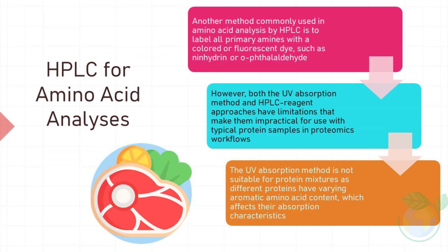HPLC for Amino Acid Analysis. Another method commonly used in amino acid analysis by HPLC is to label all primary amines, such as the N-terminus and side chain of lysine residues, with a colored or fluorescent dye, such as ninhydrin or ortho-phthalaldehyde (OPA). However, both the UV absorption method and HPLC reagent approaches have limitations that make them impractical for use with typical protein samples in proteomics workflows. The UV absorption method is not suitable for protein mixtures as different proteins have varying aromatic amino acid content, which affects their absorption characteristics. Additionally, any non-protein content that absorbs UV light will interfere with measurements.